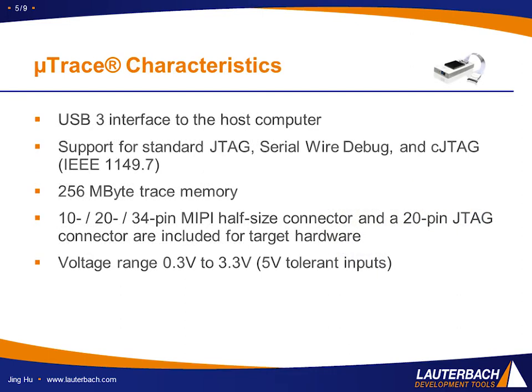Microtrace has a USB 3.0 interface to the host computer and supports standard JTAG, cJTAG, and Serial Wire Debug protocols. It has 256MB of trace memory and is able to do 4-bit parallel trace. There are 10, 20, and 34-pin half-size connectors available for connecting to the target hardware, along with a wide variety of adapters to work with other connectors. The working voltage range is between 0.3 and 3.3 volts.